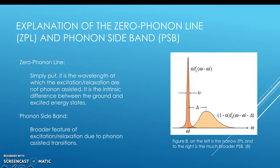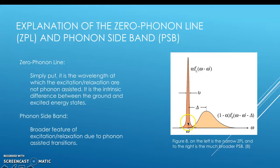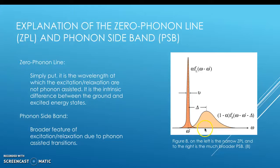Moving into the bulk of the research, it's important to understand what a zero phonon line and a phonon sideband are. The zero phonon line, seen as the narrow peak, is the wavelength at which excitation and relaxation are not phonon assisted — it is the intrinsic difference between the ground and excited energy states. The phonon sideband is a broader feature due to phonon-assisted transitions.